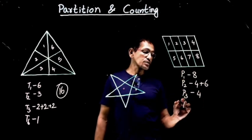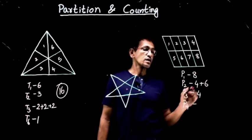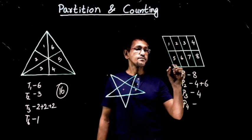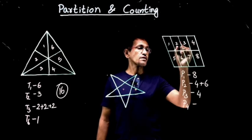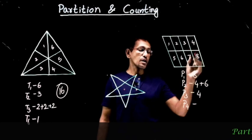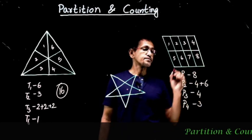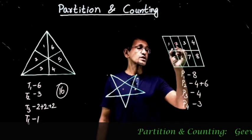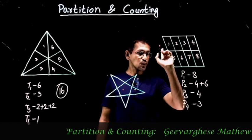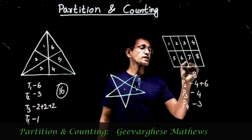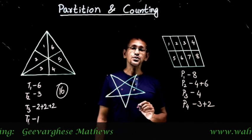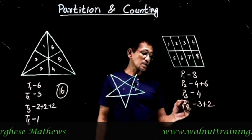Four pieces together: one, two, five, six is a parallelogram; two, three, six, seven is another; three, four, seven, eight is another — so three parallelograms. How about four pieces this way? One, two, three, and four is one parallelogram; five, six, seven, and eight is another. So three plus two equals five for P4.